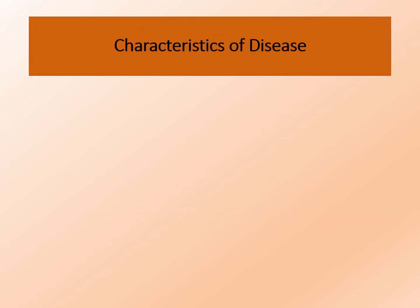Every disease that affects the body alters the body's structure and function in a particular way. These alterations are usually indicated by several kinds of evidence: signs, symptoms, and syndrome.